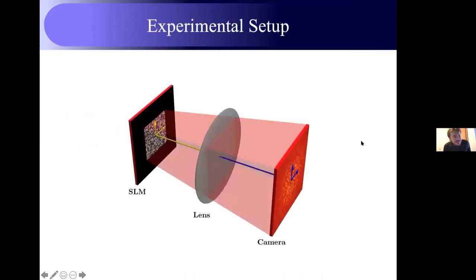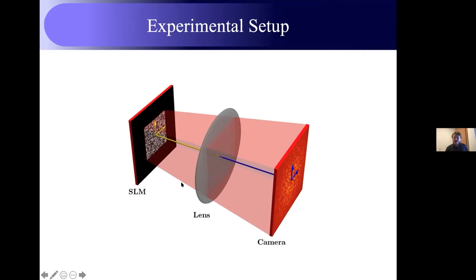The experimental setup is pretty simple. We have a spatial light modulator where we can control the wavefront of a laser beam. We also have a lens and a CCD camera to measure the intensity distribution of the speckle patterns. The lens is configured to image the Fourier transform of the spatial light modulator onto the CCD camera. The distance between the lens and SLM is one focal length F, and the distance between the lens and the camera is also F.